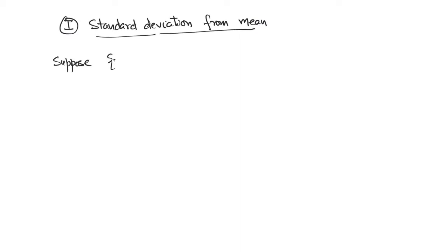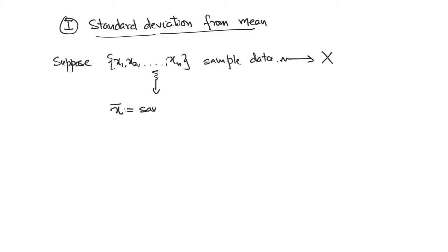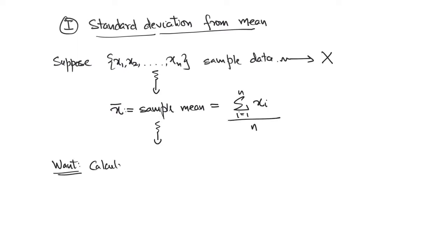Suppose we have sample data given by x1, x2, up to xn. We will call this set capital X, and the sample mean is defined as the sum of all the xi's divided by n, which is the sample size. The goal now is to find a measure that helps us calculate the deviation of the data points from the sample mean, which is x-bar.